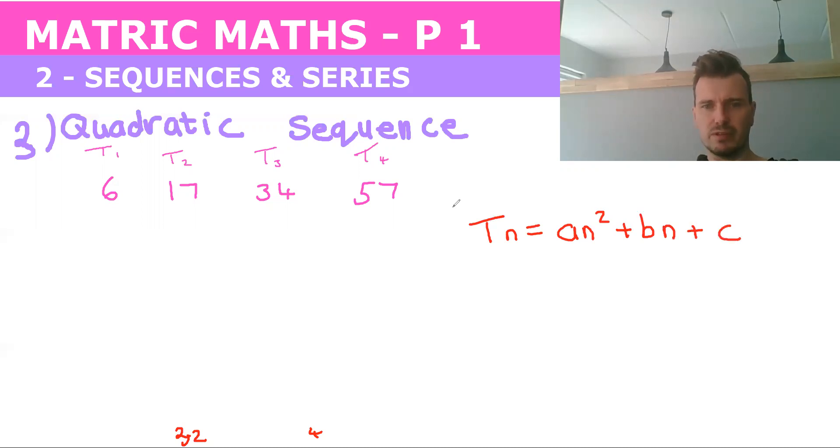Okay, so the formula for it is Tn equals An squared plus Bn plus C. So remember when we're solving for quadratics, Ax squared plus Bx plus C. This quadratic sequence uses exactly the same formula as that. So it's pretty easy to remember. And then there's a couple of other formulas that you need to remember as well, which we'll look at.